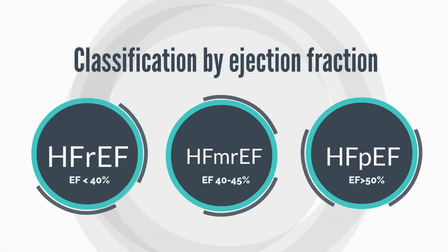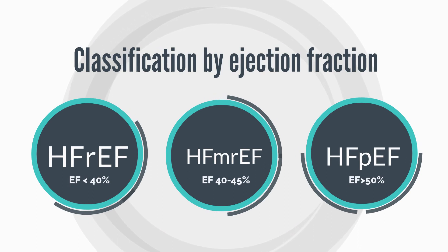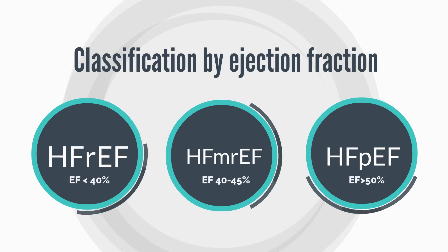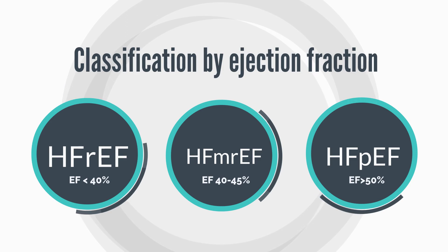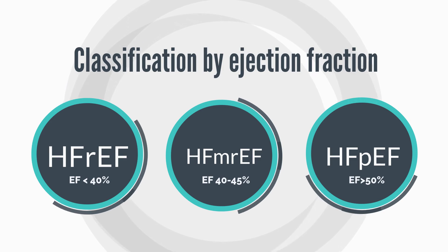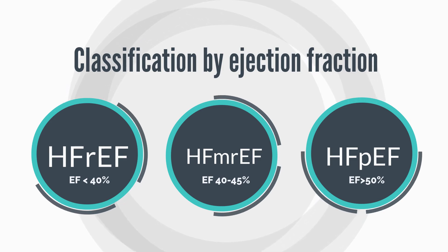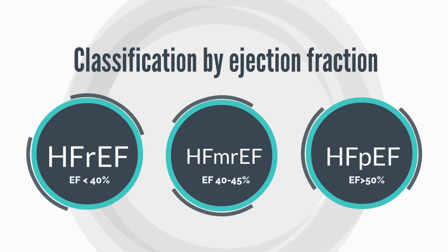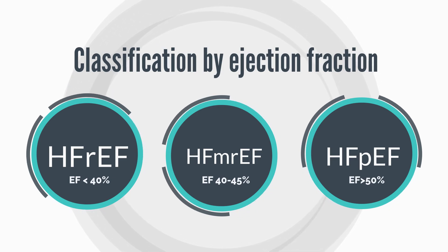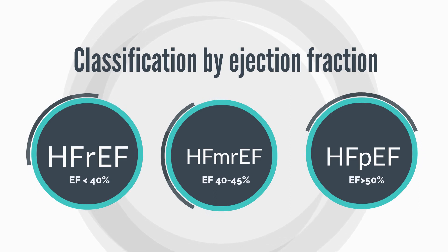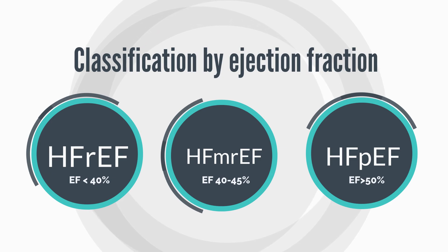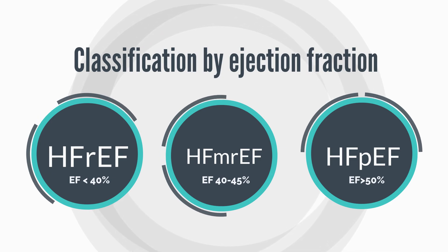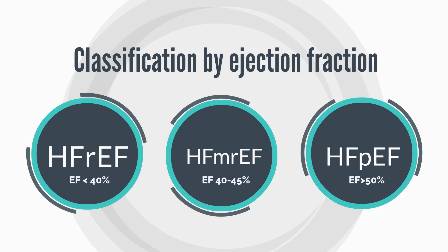Heart failure can be classified based on the ejection fraction into heart failure with a reduced ejection fraction, mildly reduced ejection fraction, and that with a preserved ejection fraction. Most studies on pharmacotherapy in heart failure in the past were based on heart failure with reduced ejection fraction. There has not been definitive evidence of treatment that improves mortality in patients with heart failure with a preserved ejection fraction, but this is an area of exciting research at present.